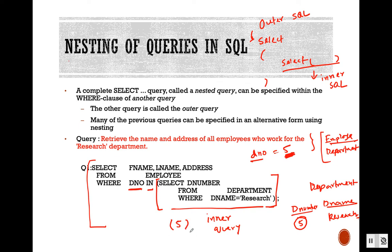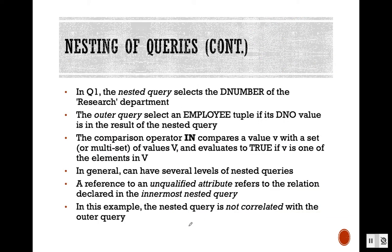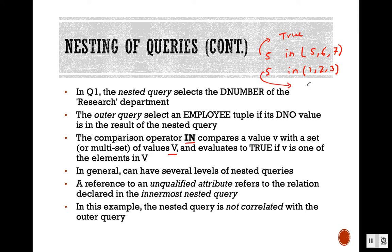Once the inner query returns five, the final query looks like: SELECT fname, lname, address FROM employee WHERE dno IN (5). The inner query can generate a list of values, and the IN operator checks whether dno matches any value in that set. For example, 5 IN (5, 6, 7) evaluates to true, while 5 IN (1, 2, 3) evaluates to false.